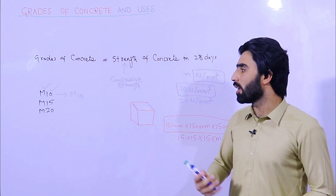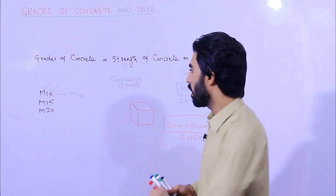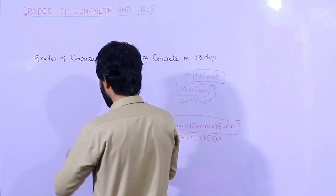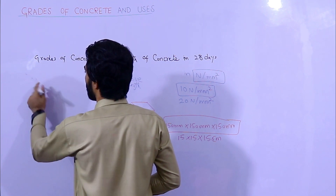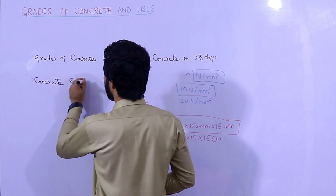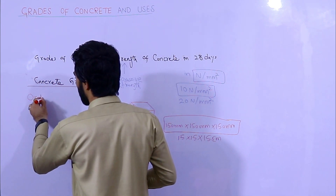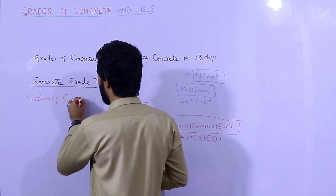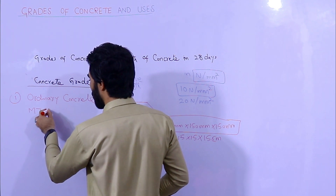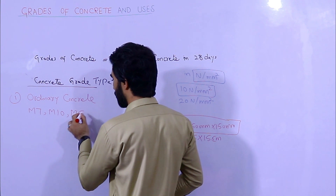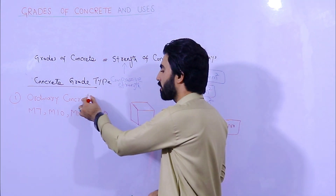There are three types of concrete grades. The first type is Ordinary Concrete. In ordinary concrete, we have M7.5, M10, M15, and M20. These grades of concrete are called ordinary concrete.